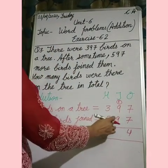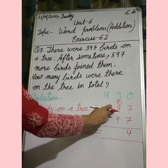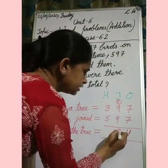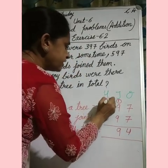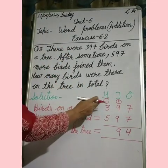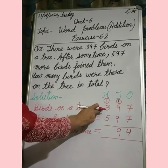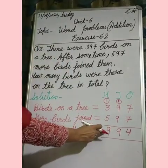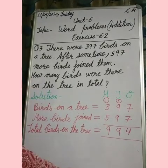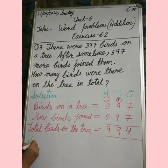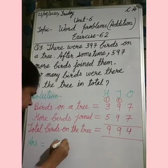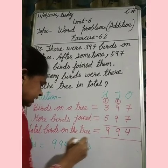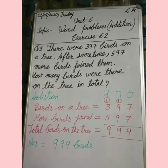Now add the hundreds digit: carry 1 plus 3 plus 5 equals 9. So the answer is 994. There were 994 birds on the tree in total.